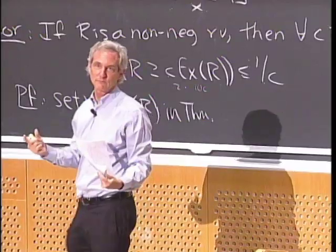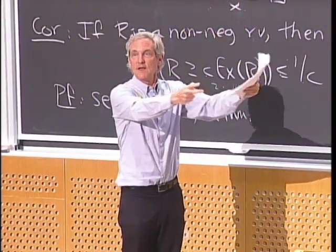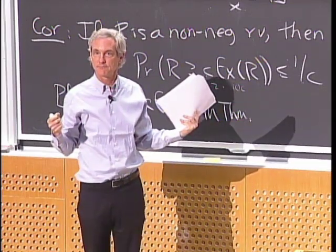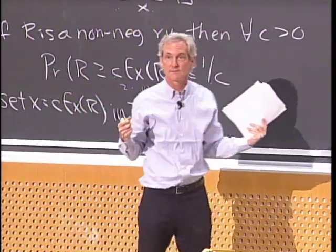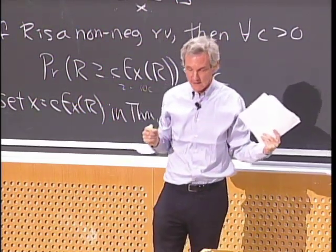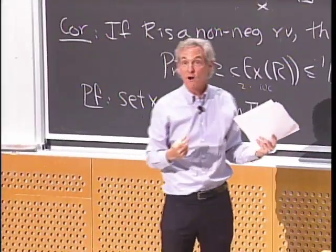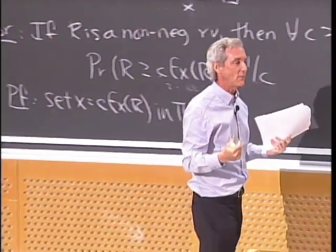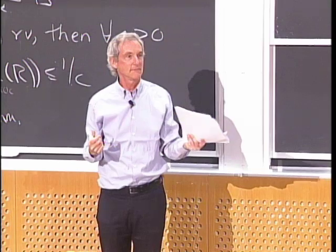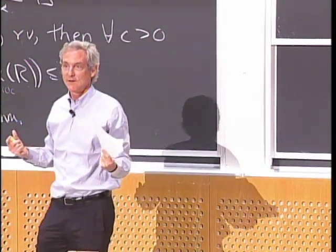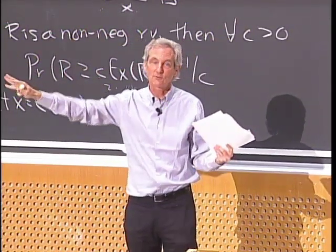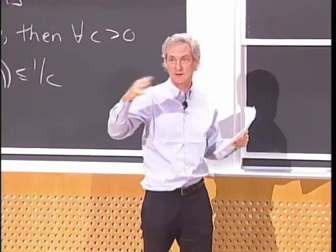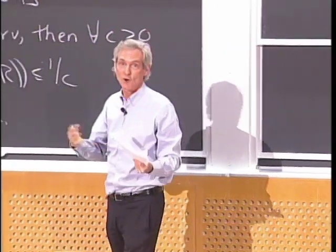In the hat check problem, n men get hats randomly permuted. The expected number getting the right hat back is also 1, so Markov says the probability all n get the right hat back is at most 1/n. But the actual probability is 1/n!, so Markov is way off. It's always an upper bound, but sometimes not tight. To get a tighter answer, you often need to know more about the distribution.